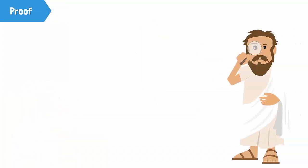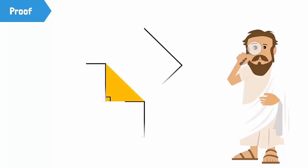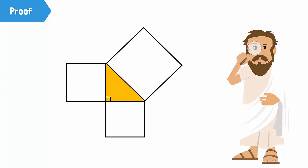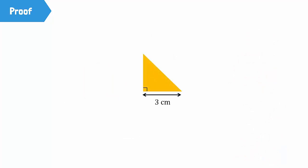How did Pythagoras prove this? By drawing squares on all three sides of a right angle triangle. Let's take a closer look at this proof. Consider a right angle triangle with a base of 3 cm, a perpendicular of 4 cm, and a hypotenuse of 5 cm.